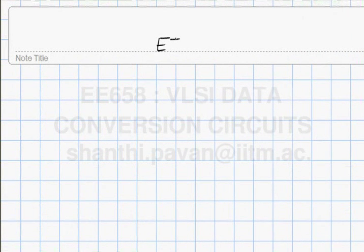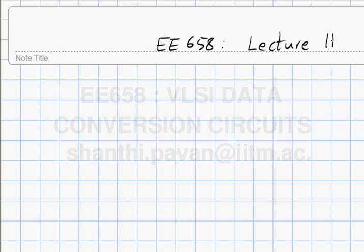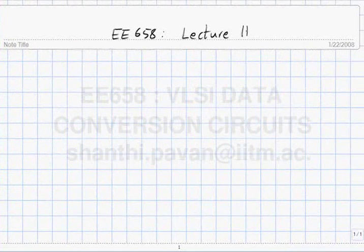This is E658 Lecture 11. In the last class, we were talking about characterizing samplers and holes, and we saw that we should choose an input frequency such that there are an integral number of input cycles within one full record length.